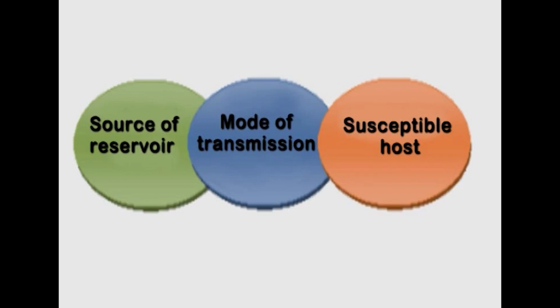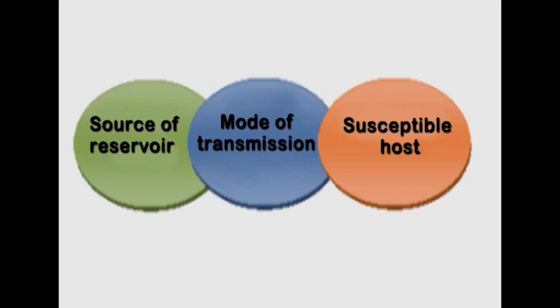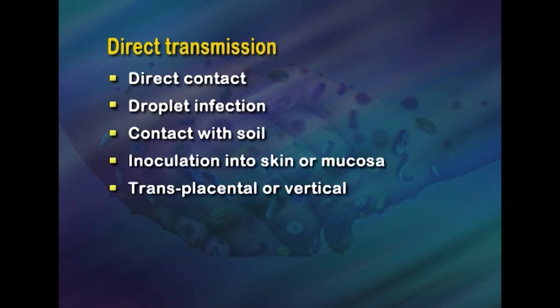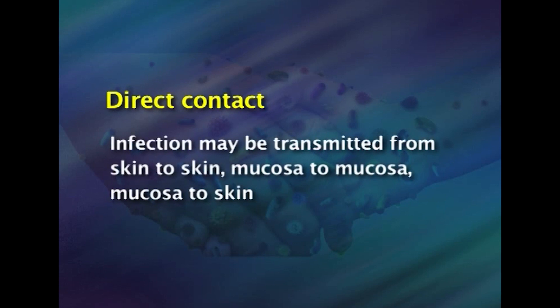Coming to infection spread, communicable diseases are transmitted from the reservoir to the susceptible host. A reservoir is defined as any person, animal, arthropod, plant, soil, substance, or combination of these in which an infectious agent lives and multiplies. Modes of transmission include direct and indirect transmission. Direct transmission includes direct contact, droplet infection, contact with soil, inoculation into skin or mucosa, and transplacental or vertical transmission. Infection may be transmitted from skin to skin, mucosa to mucosa, or mucosa to skin.